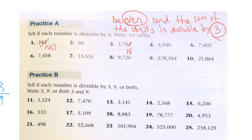Number 4 ends in a 0 — that's even. Number 5 ends in a 2 — that's even. Number 6 ends in an 8 — that's even. Number 7 ends in a 5 — that's not even. Number 8 ends in a 0 — that's even. Number 9 ends in a 4 — that's even, and same for number 10. Now we need to check if the remaining even numbers are also divisible by 3, since all even numbers are already divisible by 2.